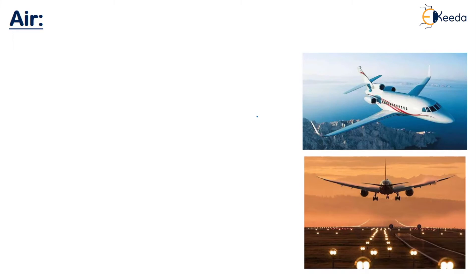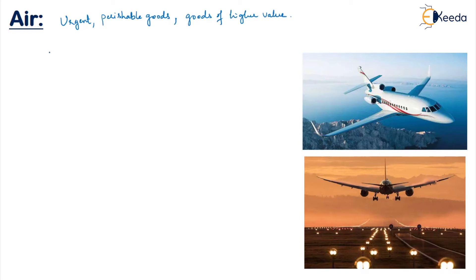Moving ahead, the next type is air transport. Air transport is majorly used for urgency, for perishable goods, and for goods of higher value. Air transport happens via flights and choppers. The major advantage — essentially the one and only advantage — is the speed of delivery. About 99% of the time, air transport is chosen because of the speed with which goods or persons can be transported from one place to another.